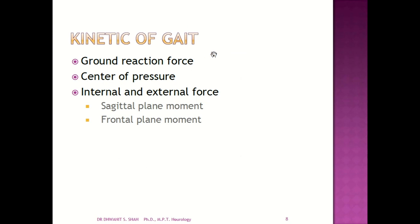Looking at the kinetics of gait, we need to cover three parts: first is the ground reaction force, which is opposite to gravity; second is the center of pressure; and third is the internal and external forces applied to the limb in order to maintain balance during gait movement. These will be seen in the sagittal plane and frontal plane movement.